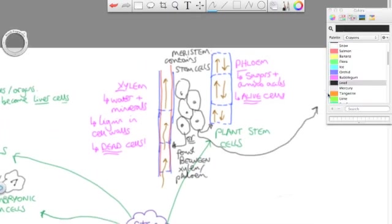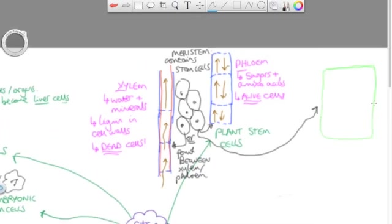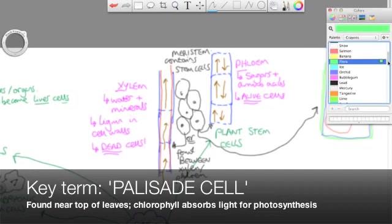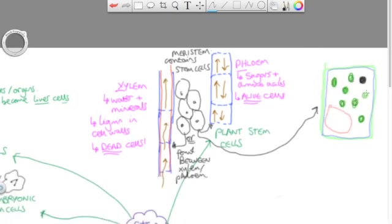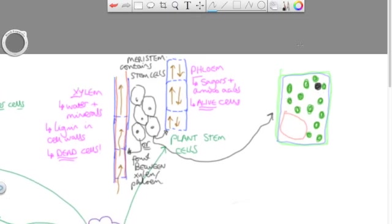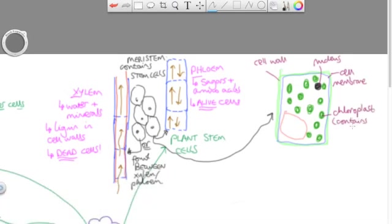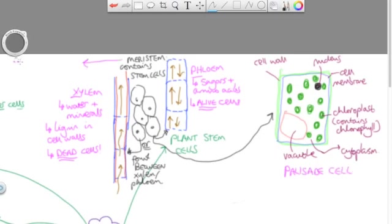Now I'm also going to draw another cell. This is called a palisade cell. And this contains chloroplasts, which aid in photosynthesis, as well as other key parts here, which I'll label. So first of all, that is the cell wall, the cell membrane's there, the nucleus, chloroplasts, which contain the pigment chlorophyll and the vacuole and the cytoplasm, which is the liquid inside it.